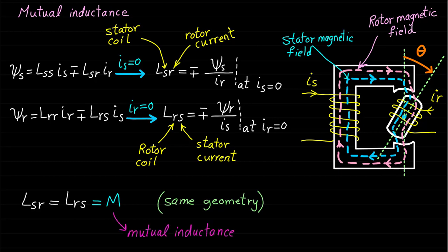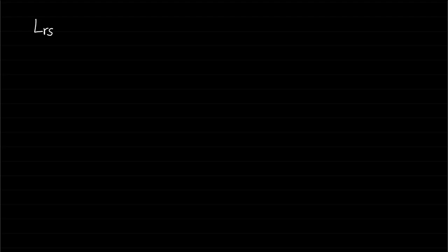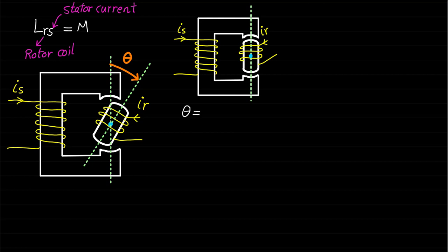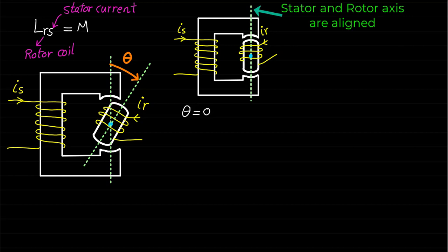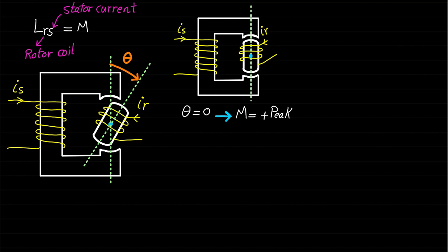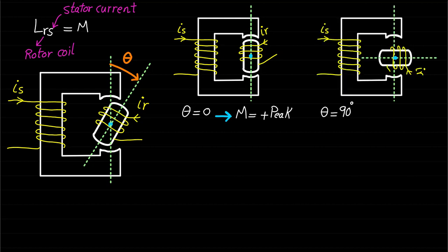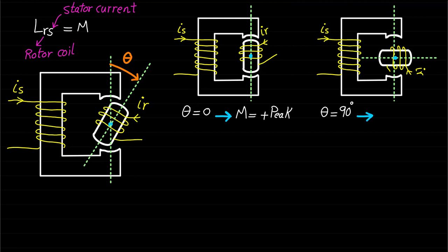Now let's explain how the mutual inductance is changing with respect to rotor position, investigating Lrs as an example. Note that Lrs equals Lsr and equals M. When theta equals zero, the magnetic field produced by the current IS is fully linking the rotor coil. Also, at this position, the stator and rotor magnetic field axes are aligned in the same direction. As a result, the mutual inductance Lrs is at positive peak or positive maximum. When theta equals 90 degrees, the magnetic field produced by IS does not link with the rotor coil because the stator magnetic field axis is perpendicular to the rotor magnetic field axis. Therefore, the mutual inductance Lrs is zero at theta equal to 90 degrees.